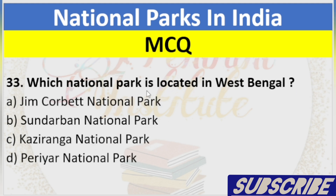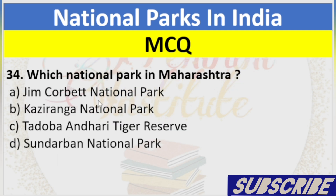Question 33: Which National Park is located in West Bengal? A. Jim Corbett National Park, B. Sundarbans National Park, C. Kaziranga National Park, D. Periyar National Park. Answer: B. Sundarbans National Park.